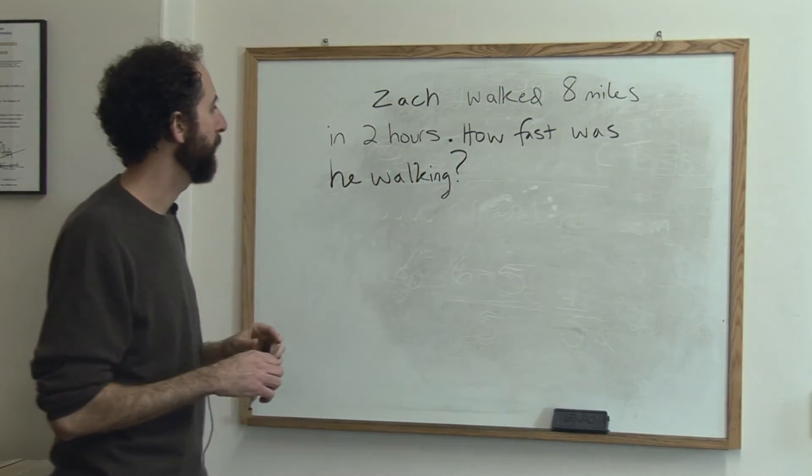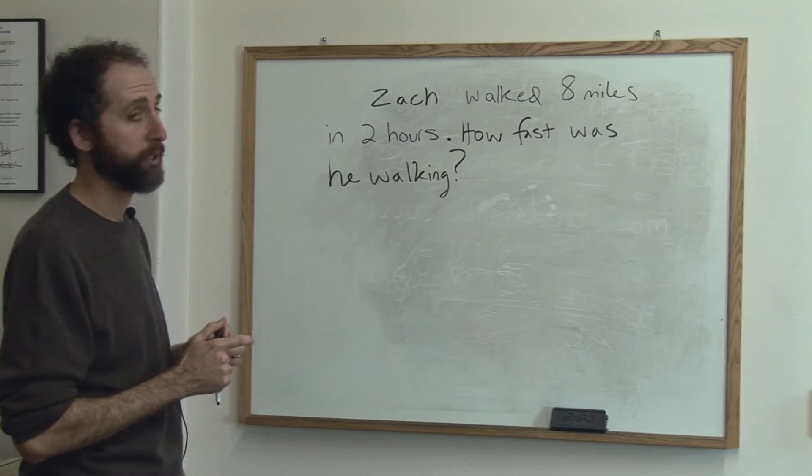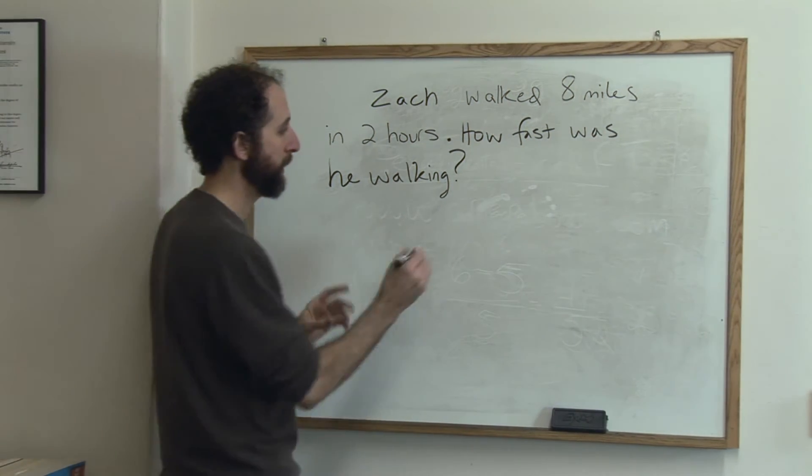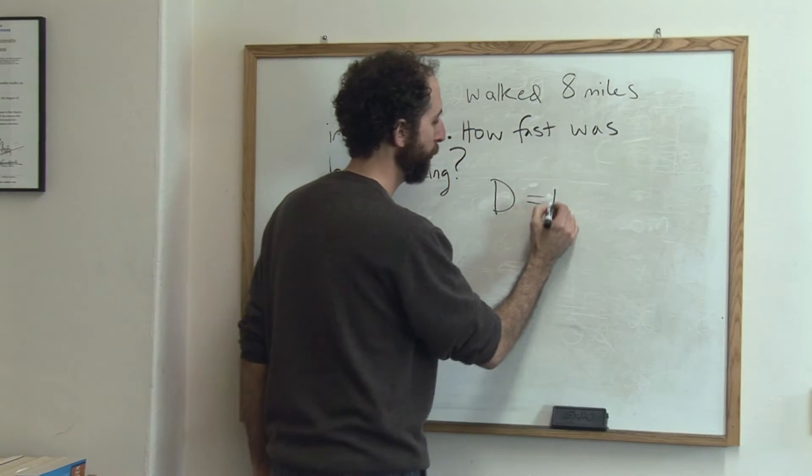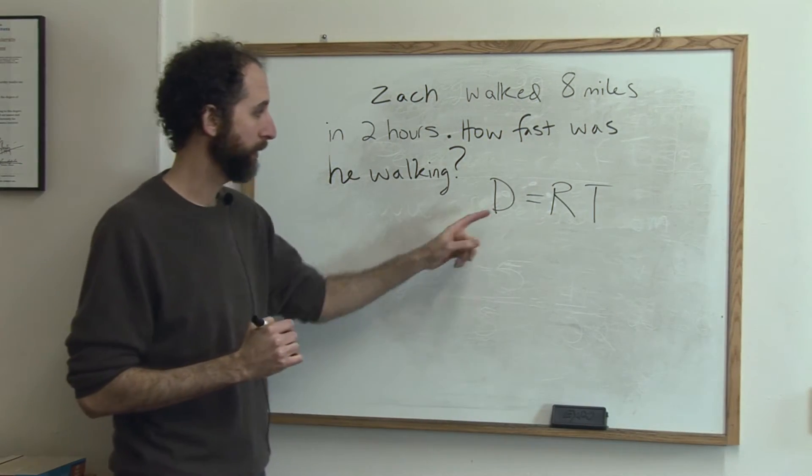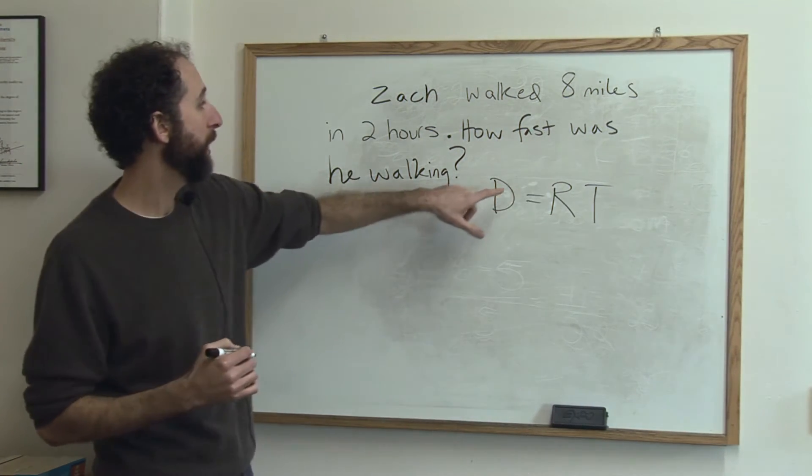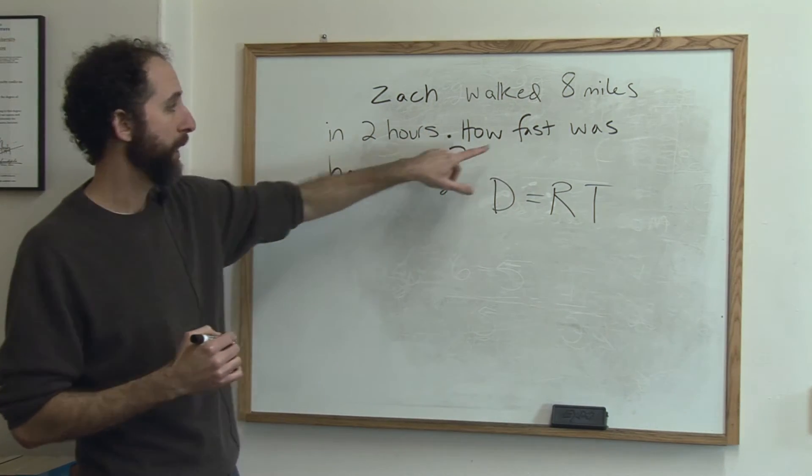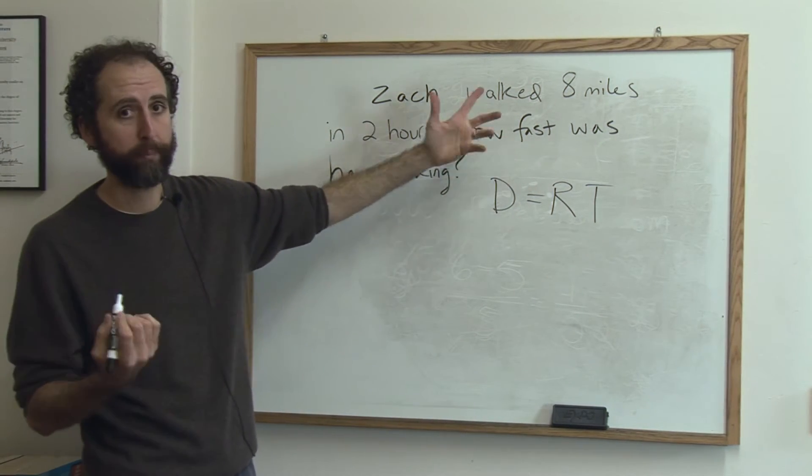Zach walked eight miles in two hours. How fast was he walking? So this is a classic distance equals rate times time question. Distance equals rate times time. And you can tell because what we've got here is a distance, a time, and a speed. A rate. Rate means speed.